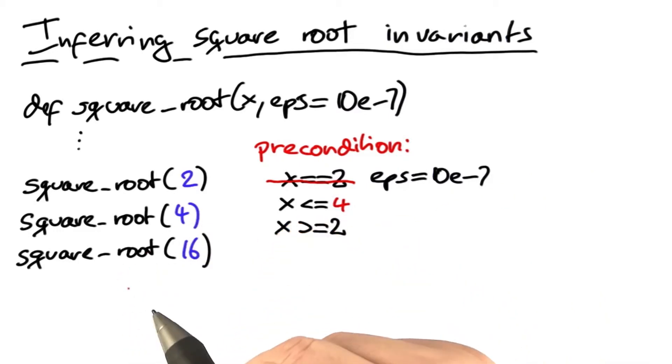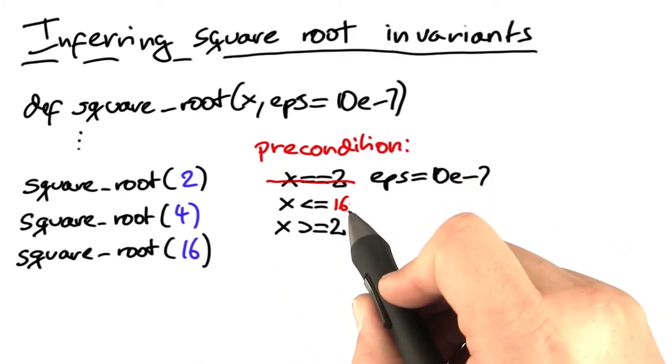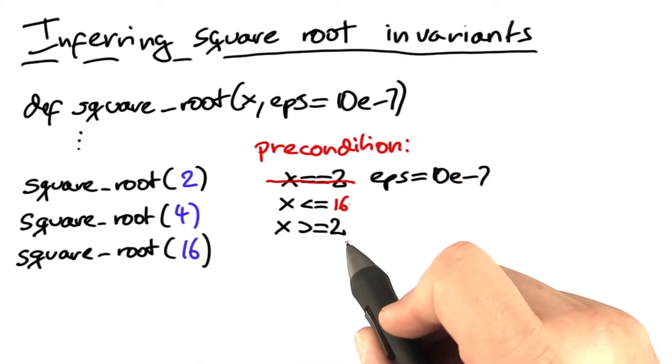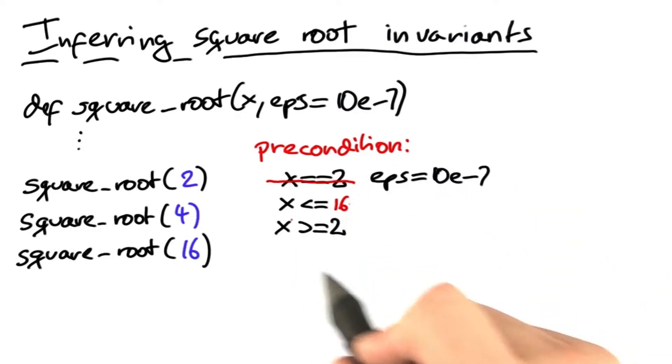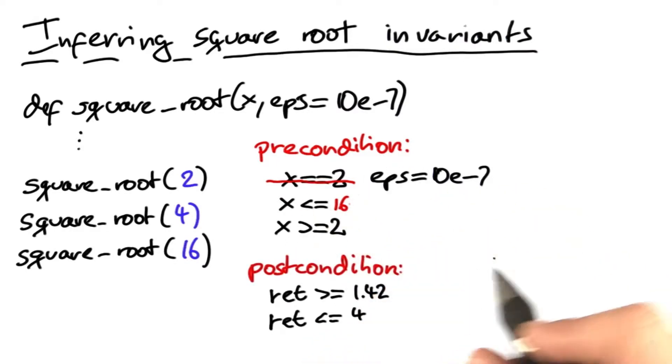When we invoke square root with 16, we now retain the invariant that x is less or equal than 16 and greater or equal than 2. And this is what we get in the end. x is between 2 and 16 and eps is always 10 to the power of minus 7.